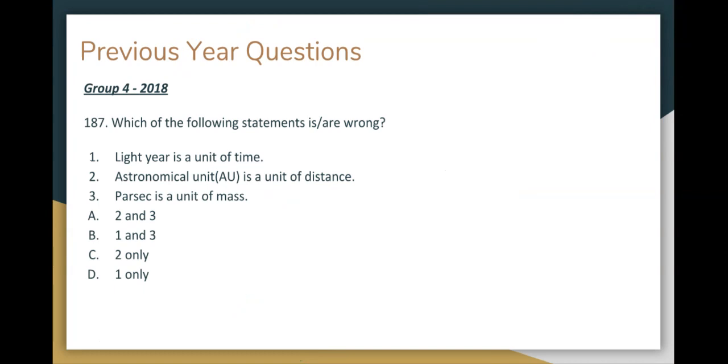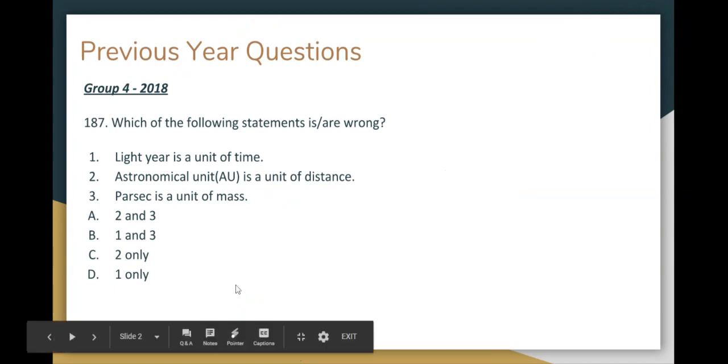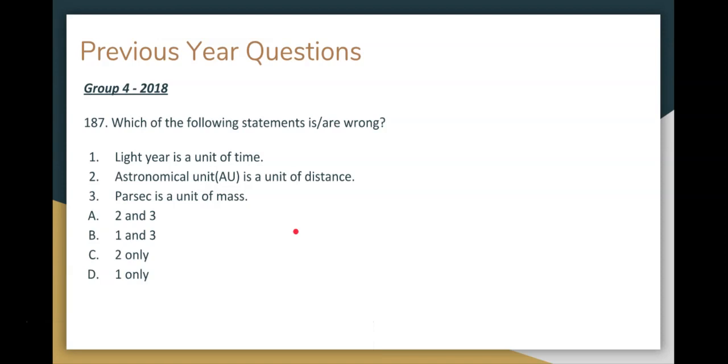Which of the following statements is or are wrong? First statement, light year is a unit of time. Second statement, astronomical unit is a unit of distance. Third statement, parsec is a unit of mass. Option A: 2 and 3. Option B: 1 and 3. Option C: 2 only. Option D: 1 only.